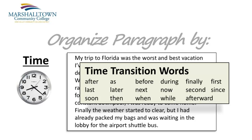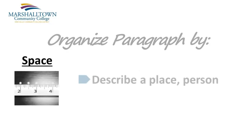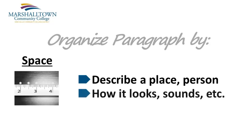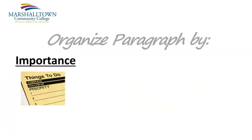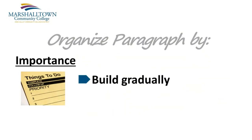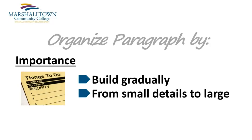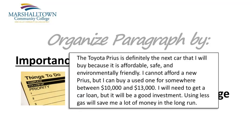Organizing your paragraph by time is the perfect choice when writing about anything that includes a sequence of events. When we organize by space, we're talking about a paragraph that describes a place, a person, or a thing. The paragraph often refers to the senses in its supporting details, like how something looks, sounds, or smells. When we organize by importance, we're talking about a paragraph that makes its point gradually, by starting with the smaller details first and then building up to the most important detail at the end. Organizing your paragraph by importance is the perfect choice when writing to persuade or convince a reader to see your point of view.